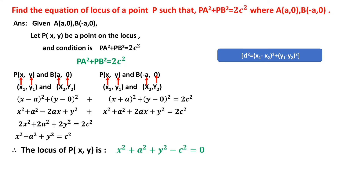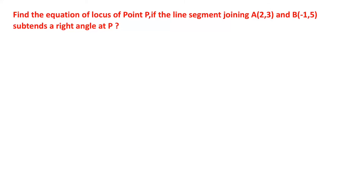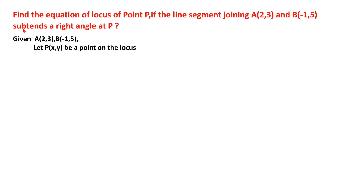Now the second problem: find the equation of locus of point P if the line segment joining A(2, 3) and B(-1, 5) subtends a right angle at P. A and B are two points and P is a point whose locus we need to find. Let P = (x, y) be any point on the locus. The condition is that P subtends a right angle for line segment AB, so A, B, and P form a right-angled triangle, right-angled at P.